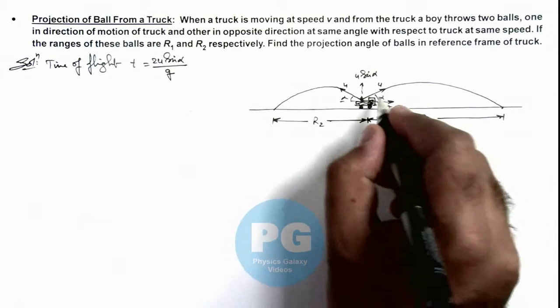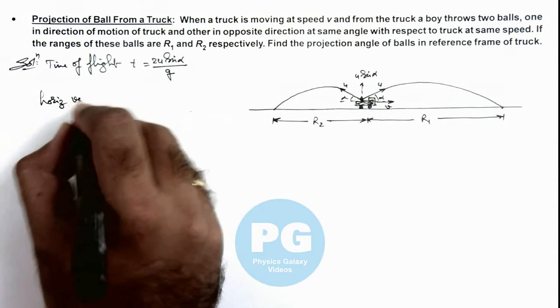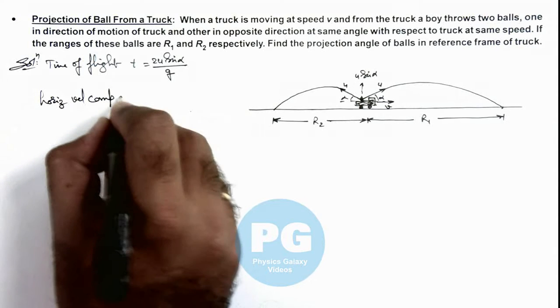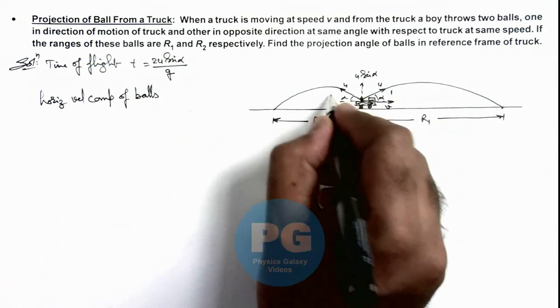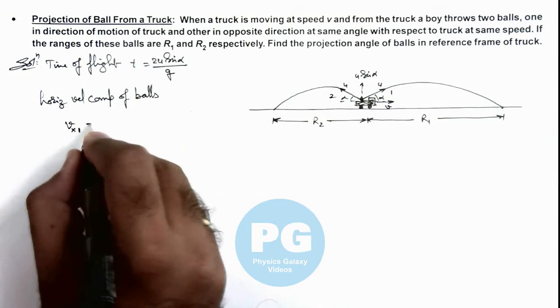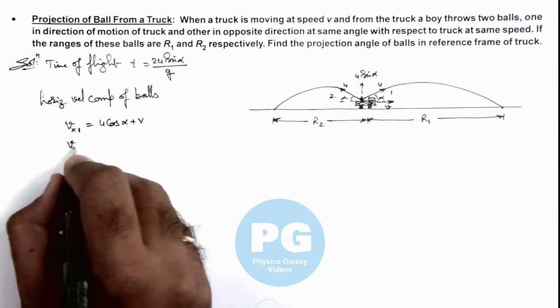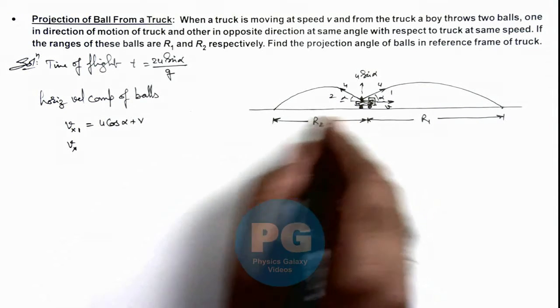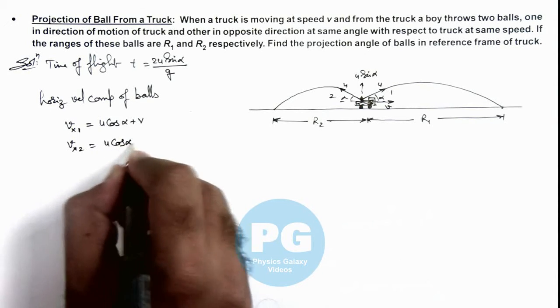Here if we talk about the horizontal velocity component of balls, if this is ball 1 and this is ball 2 then we can write velocity in x direction for ball 1 as u cos alpha plus v, and velocity of ball 2 in x component can be written as u cos alpha minus v.